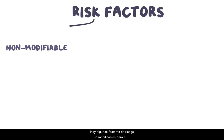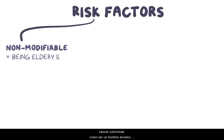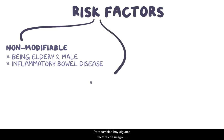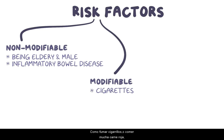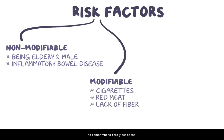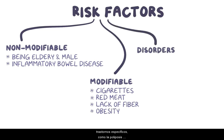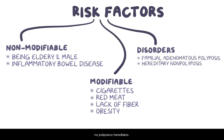There are some non-modifiable risk factors for colorectal cancer, like being an elderly male and having inflammatory bowel disease. But there are also some modifiable risk factors as well, like smoking cigarettes, eating a lot of red meat, not eating a lot of fiber, and being obese. Colorectal cancers are also associated with specific disorders like familial adenomatous polyposis, as well as hereditary non-polyposis colorectal cancer.